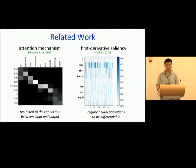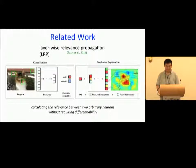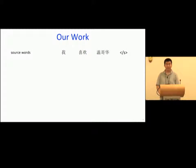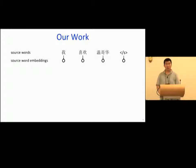Thanks for the very nice talk. I have a small question about this visualization on the standard example. Is that just the one-best translation, or if you also look at beam search — I assume your work involves beam search in decoding — maybe you can extend your work to explain why certain good translation candidates rank higher, or is that still in the middle of the research?